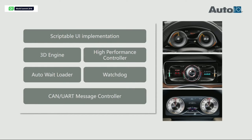Here are the components for the automotive cluster that we can extend based on QML plugins. The majority of the UI is developed in QML, which we can change very quickly. There is also a 3D engine, which I will explain later. And a high-performance controller — that is a special UI element for the cluster. For example, the dashboard ring, which is drawn using QtSyncGraph, gives us better performance.